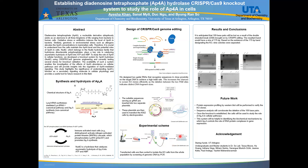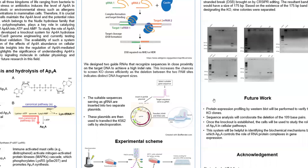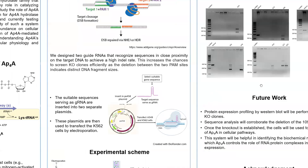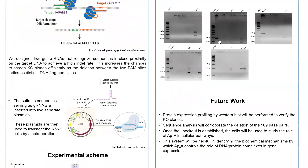The CRISPR design was expected to result in the loss of 109 base pairs in the fifth exon of the NUDT2 gene. So the resultant band would have a size of 175 base pairs, whereas the original band has a size of 284 base pairs. Based on the presence of this 175 base pair band, as you can see in this agarose gel, the native band is 284 and the knockout band — visible in all of the colonies I isolated — is 175 base pairs.